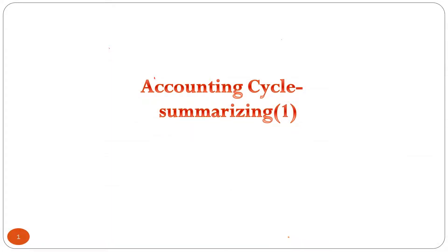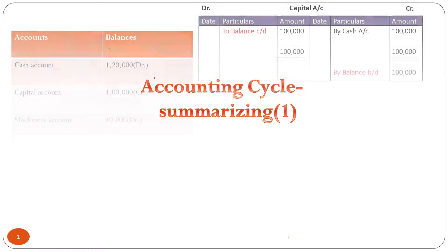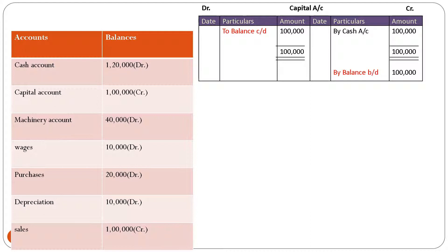Hello, in this lecture we'll understand Step 3 of the accounting cycle — summarizing. In our previous video we learned how to prepare ledger accounts, basically posting of various journal entries and balancing of the T-shaped accounts. So let's move ahead from where we left off. In the previous videos we learned how to prepare the capital account and different accounts from transactions already recorded in the journal.